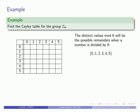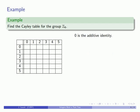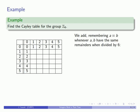We form the Cayley table. 0 is the additive identity, so this allows us to fill in that row and column. Then we can do the other additions, remembering that a is congruent to b whenever a and b have the same remainders when divided by 6.